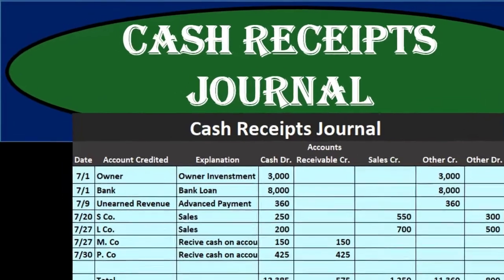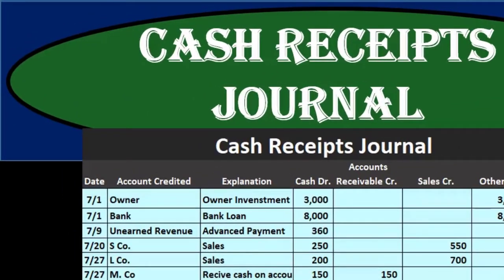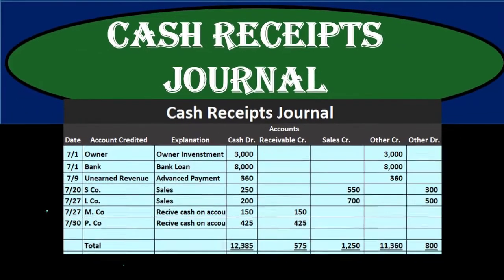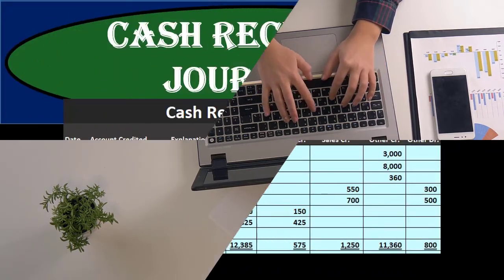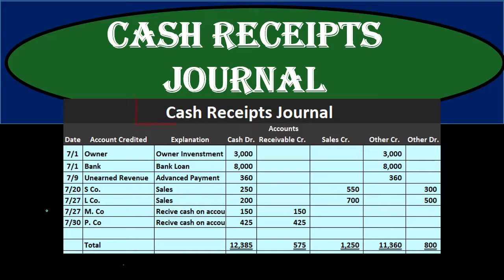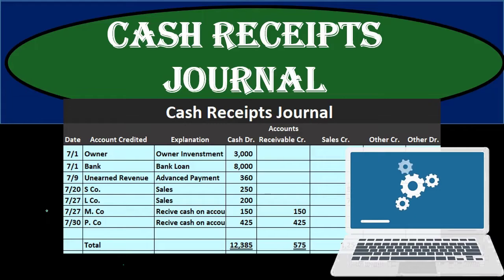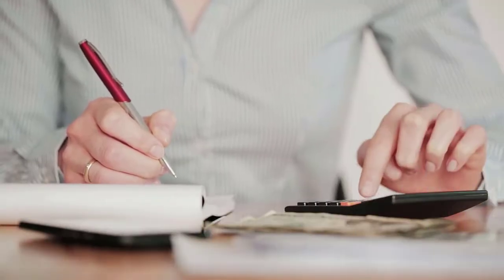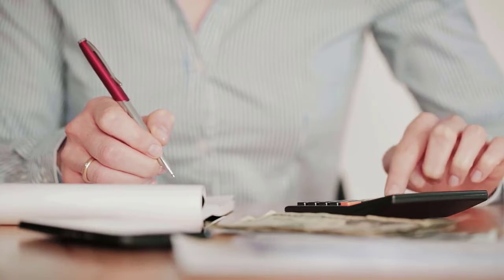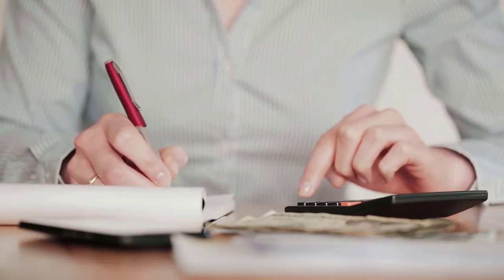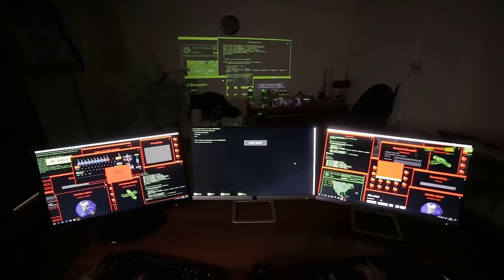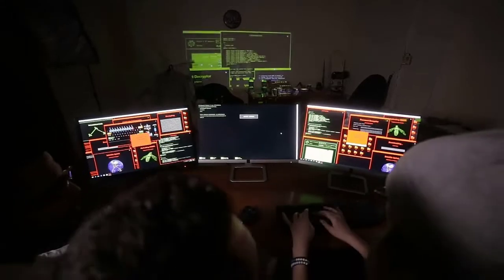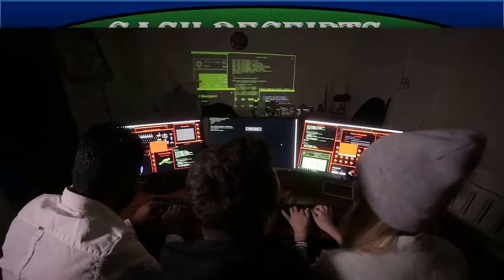In this presentation we will talk about the cash receipts journal. The cash receipts journal will be used when we have cash receipts in a more manual system or a data input system done by hand, as opposed to an automated system. It's still useful to know the cash receipts journal even if using an automated system, because we might want to generate similar reports, and it's good to compare different types of accounting systems.